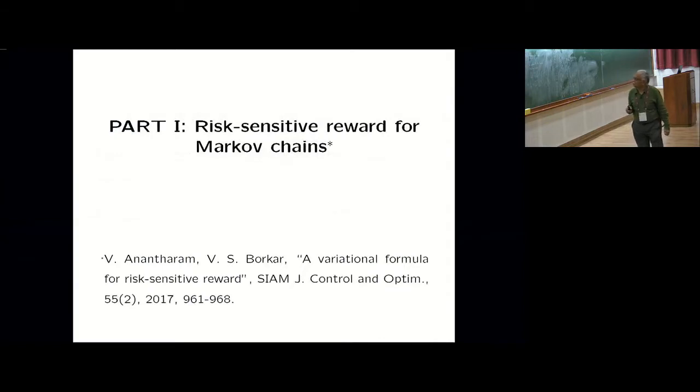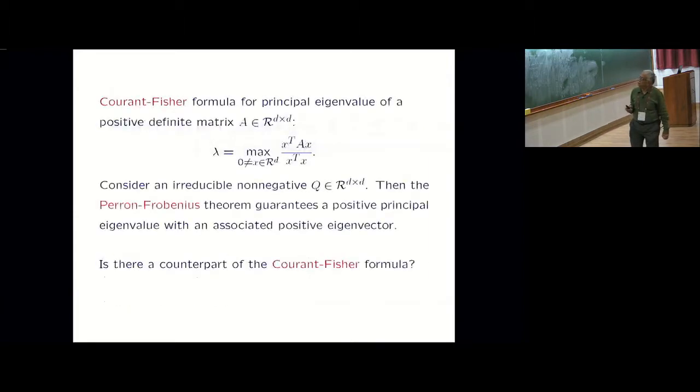The first one is the research reward for Markov chains based on this paper which has already appeared with Venkatesh Anantharam. I'll give some background first. This is a well-known formula for the principal eigenvalue of positive definite symmetric matrix called Courant-Fisher formula.